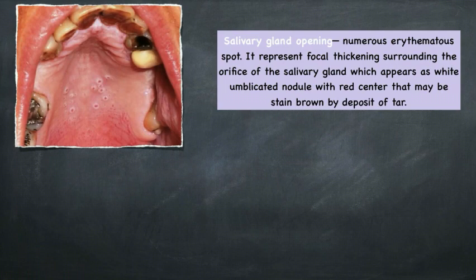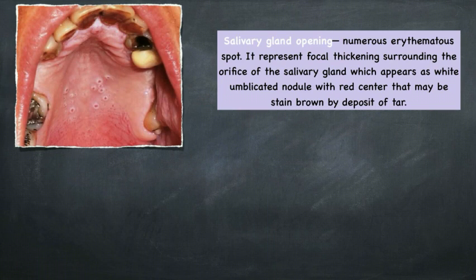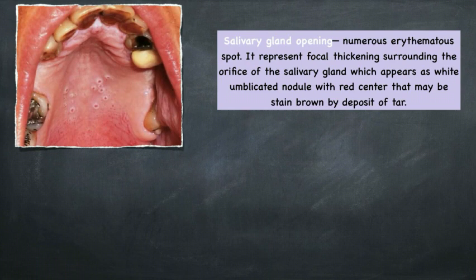Two important things to know about stomatitis nicotina: first, in early stages the lesion appears as just reddened mucosa and subsequently becomes grayish-white. You can see salivary gland openings — numerous erythematous spots representing focal thickening surrounding the orifice of salivary glands — appearing as white umbilical nodules with a red center that may stain brown due to tar deposits. These are normally presented separately with some normal tissue in between, and very rarely coalesce together.